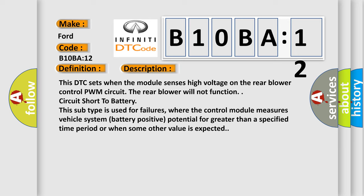This DTC sets when the module senses high voltage on the rear blower control PWM circuit. The rear blower will not function, circuit short to battery.